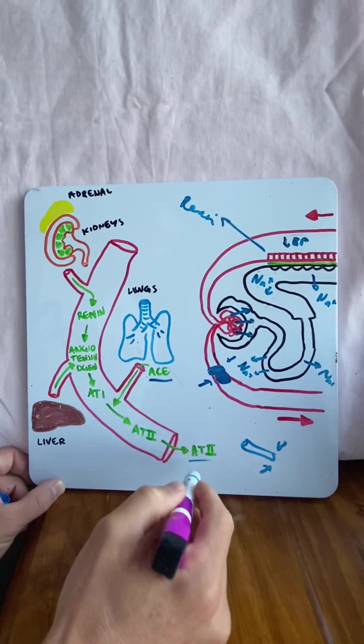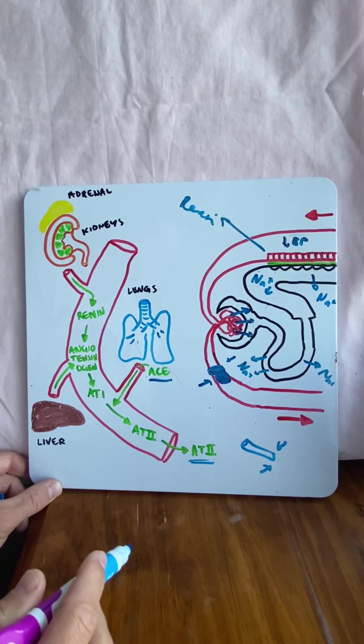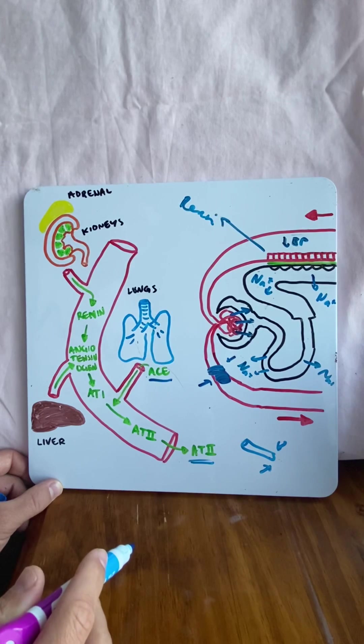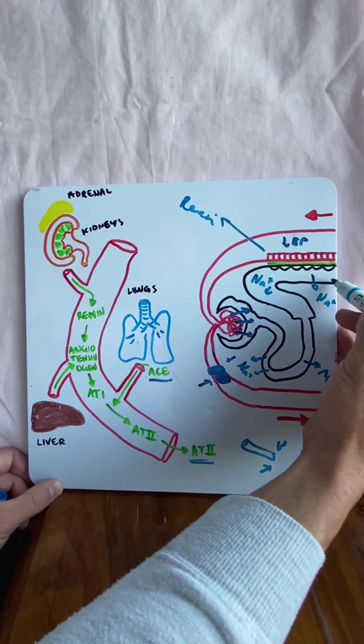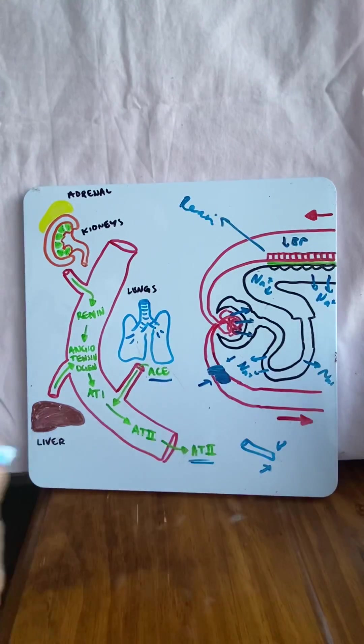And then the last thing is that angiotensin-2 goes to the hypothalamus and stimulates the release of antidiuretic hormone. Here it throws more water back into the body, more water, more blood volume, more blood pressure.